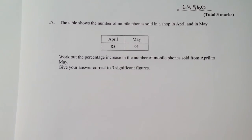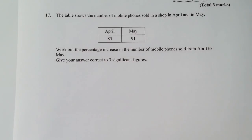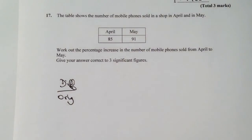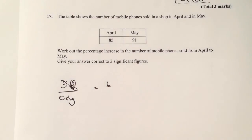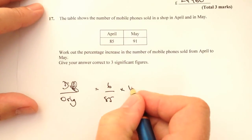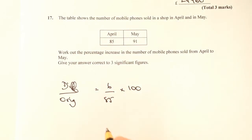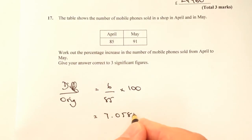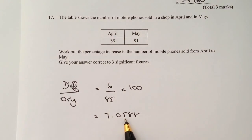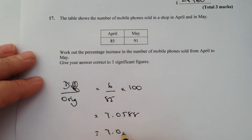The final question in this video is question 17, which is about mobile phones — another percentage increase question. The formula to remember is difference over original. The difference is 6 because there are 6 more phones sold in May than in April, and the original in April was 85. Multiplied by 100 for percentage, plugged into the calculator gives 7.0588. The question says to three significant figures, so looking at the fourth figure to round the third, that's a percentage increase of 7.06%.